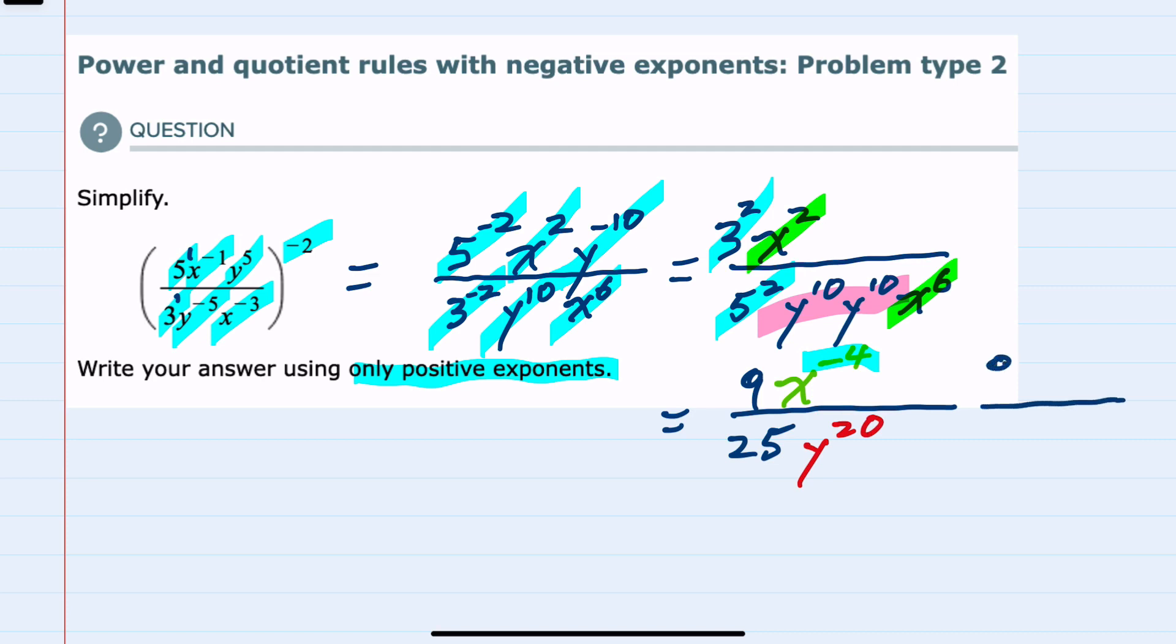I can do that by leaving everything else where it is. Everything else has positive exponents. The y negative 4 in the numerator would move to the denominator to be a positive 4, and this would be our simplified expression.